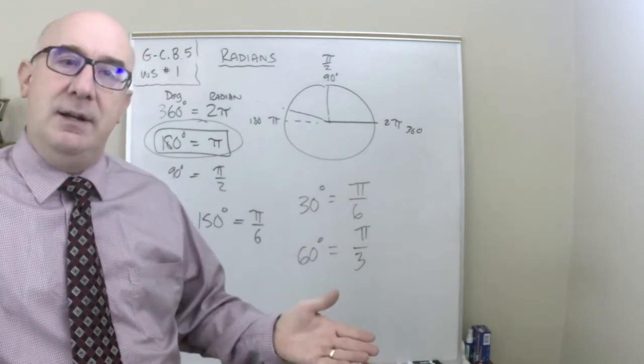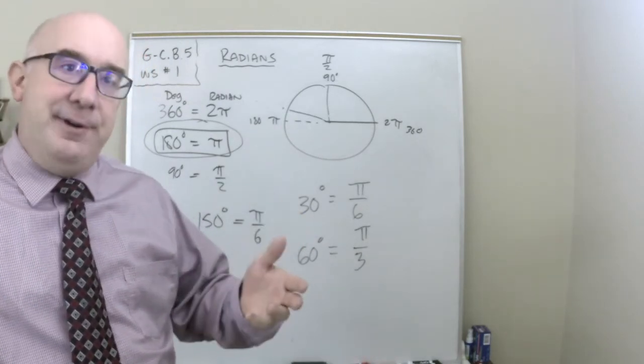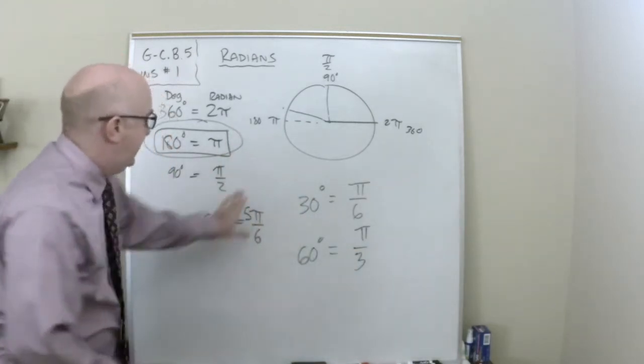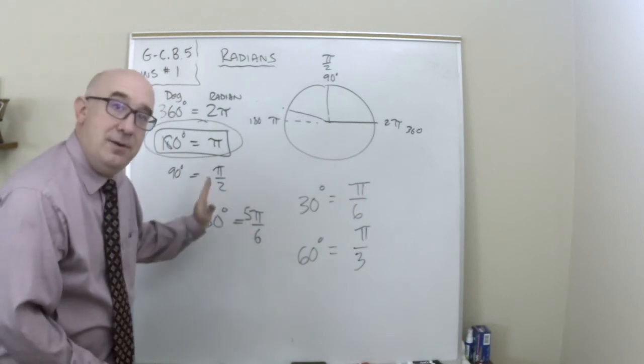And I need 150. So how many 30s make 150? Five of them. Oh, 5 times 30 is 150.